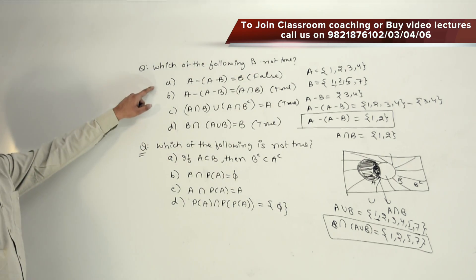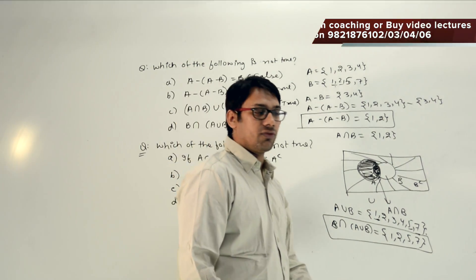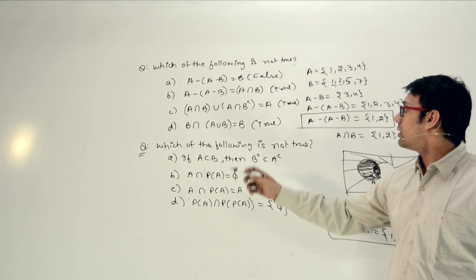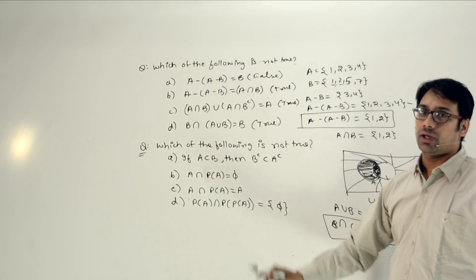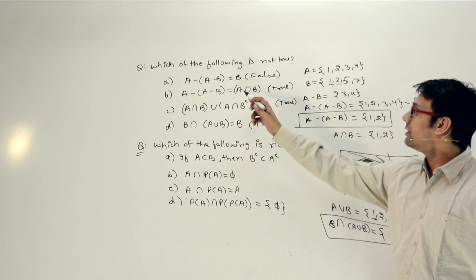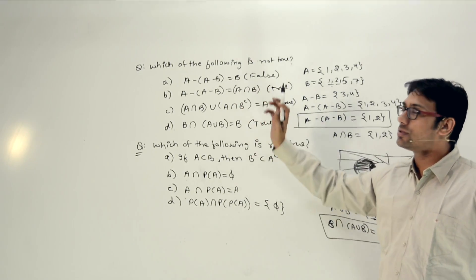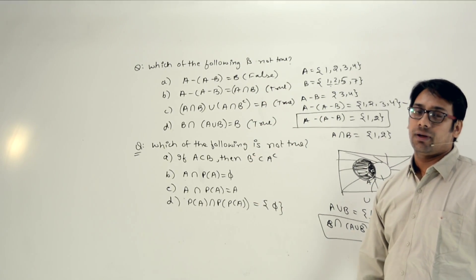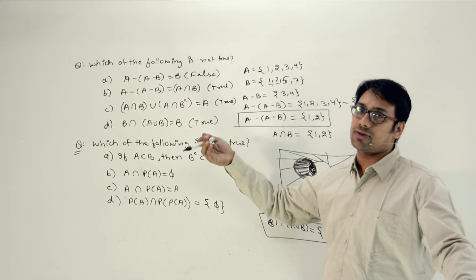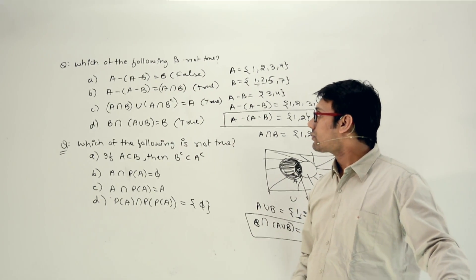So option A is false. Just by looking at these questions and thinking they are simple, you are likely to make mistakes. If you take specific values and verify, you can clearly see which option is false. You must analyze carefully rather than trying to solve it just by inspection.